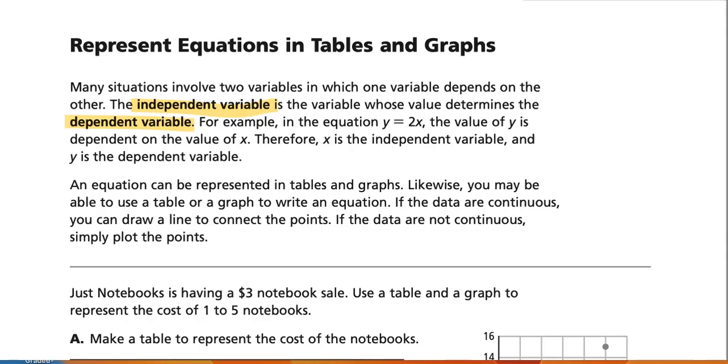The independent variable is the variable whose value determines the dependent variable. For example, in the equation y equals 2x, the value of y is dependent on the value of x. Therefore, x is independent and the y is dependent.